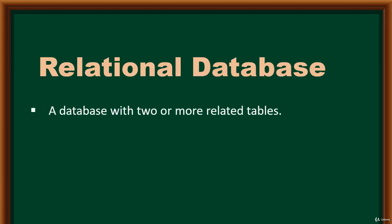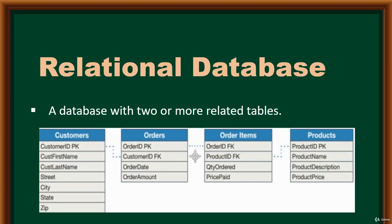A relational database is a database where two or more tables are related. For example, we can have a customers table, an orders table, an order items table, and a products table. With a relational database, there must be relationships between two or more tables. The customer ID in the customers table is related to the customer ID in the orders table, represented by a connecting dot.